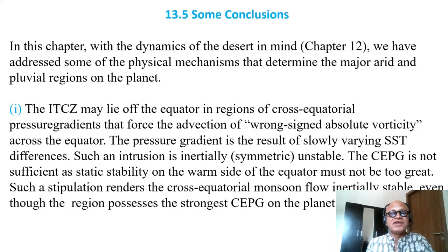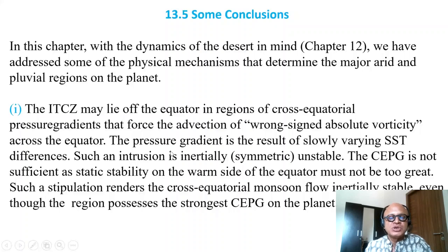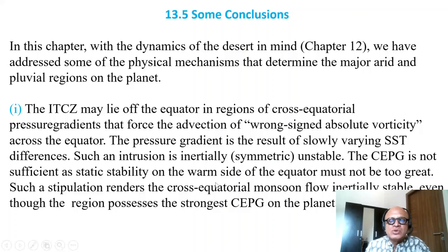ITCZs may lie off the equator in regions of cross-equatorial pressure gradients that force the advection of wrong-signed absolute vorticity across the equator. We already talked about how f times η being less than zero is an important condition for inertial instability, which drives convection. The pressure gradient is the result of slowly varying SST differences, and given that distribution and the associated pressure gradients, we built our dynamics — such an intrusion is inertially or symmetrically unstable.